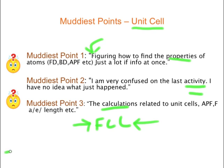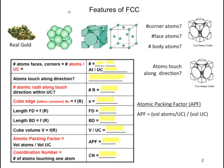If there is a particular calculation that you want to see, there is a whole bunch of hyperlinks down here. So, let's go. This is the activity being referred to — finding the features of the FCC unit cell. We are expected to find all of the things in this box.